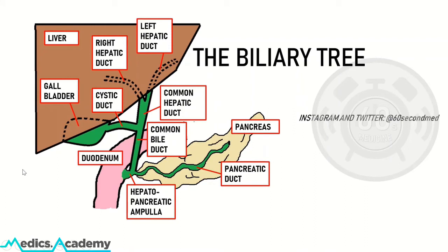These secretions are controlled by the sphincter of Oddi, which is a muscular sphincter surrounding the hepatopancreatic ampulla. That's a quick presentation on the anatomy of the biliary tree.